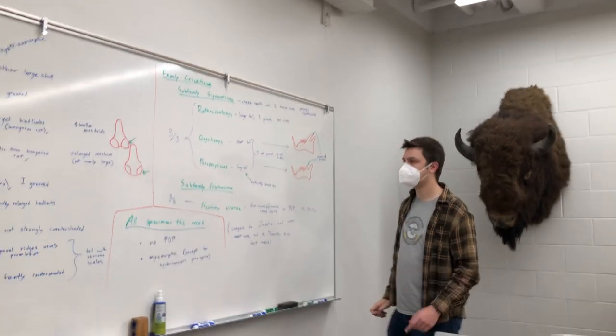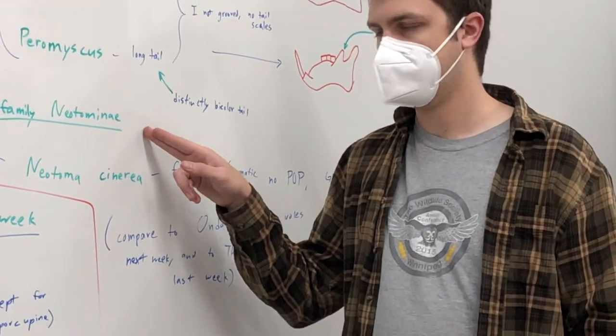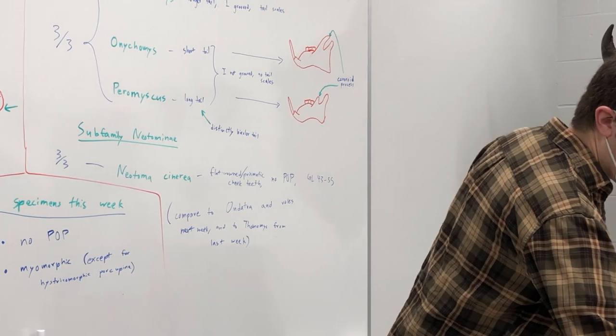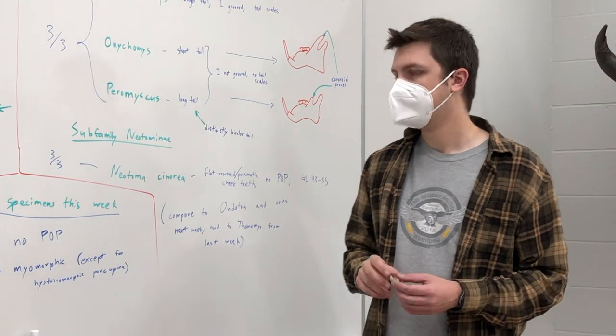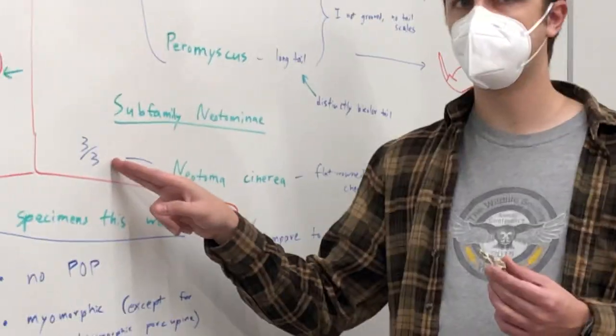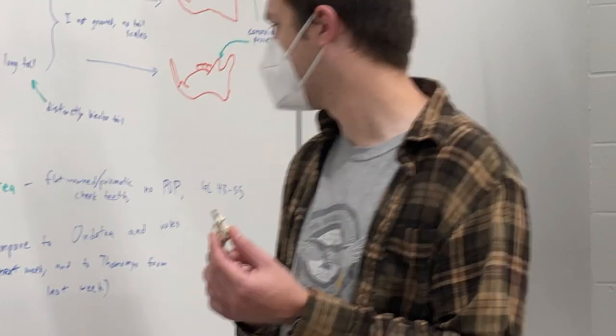The last species I want to talk about then is subfamily Neotominae. So this is its own different group. It has its own weird looking teeth. Neotoma cinerea has three upper incisors and three lower incisors, but that might be hard to tell because the teeth look really strange. These have flat crowned prismatic teeth.